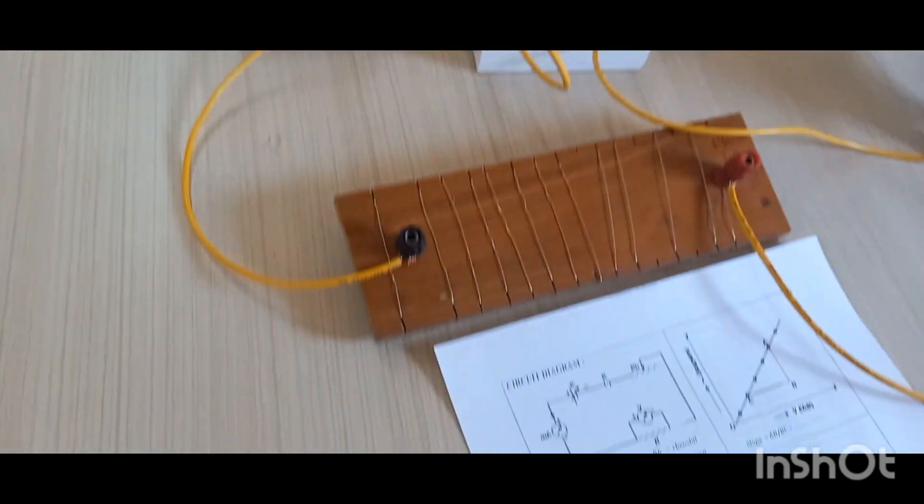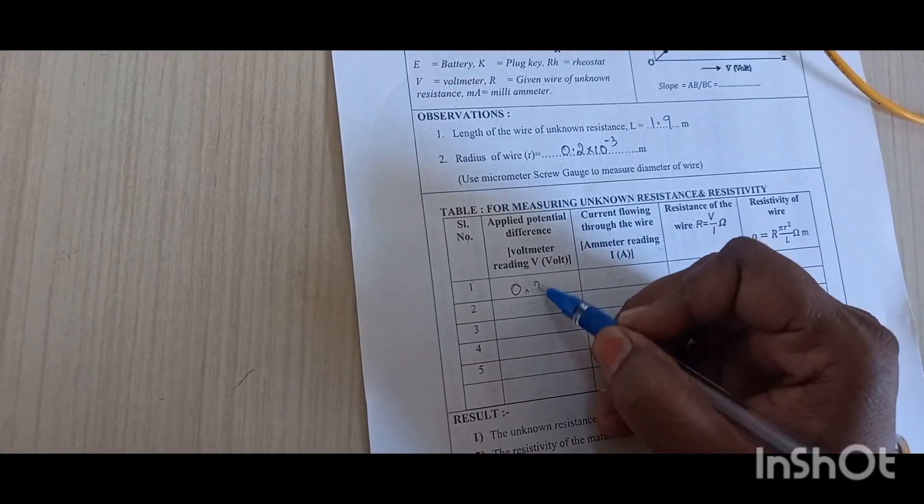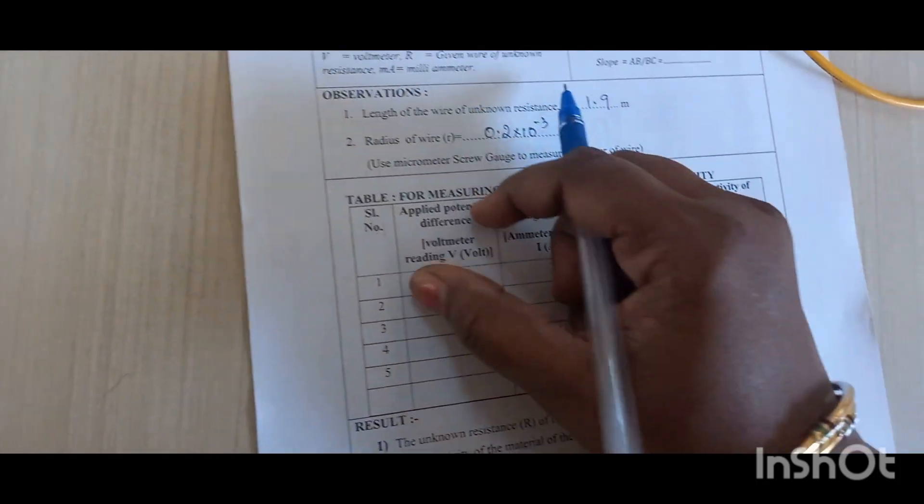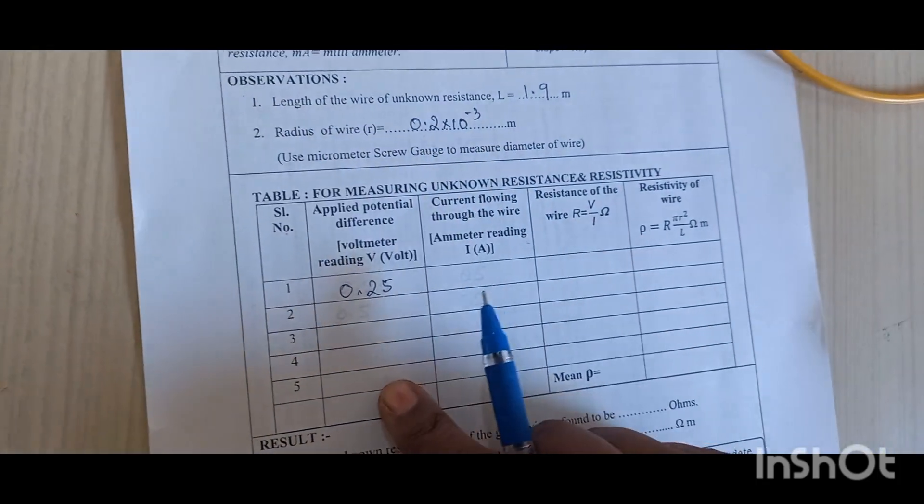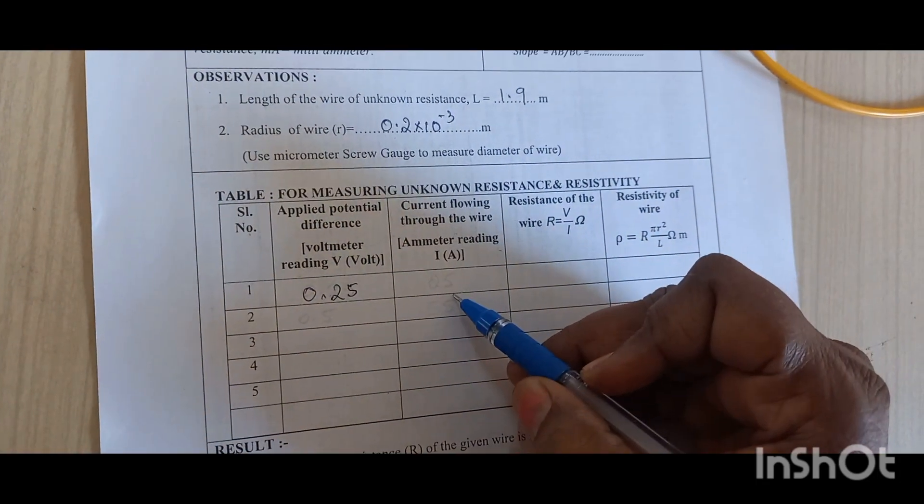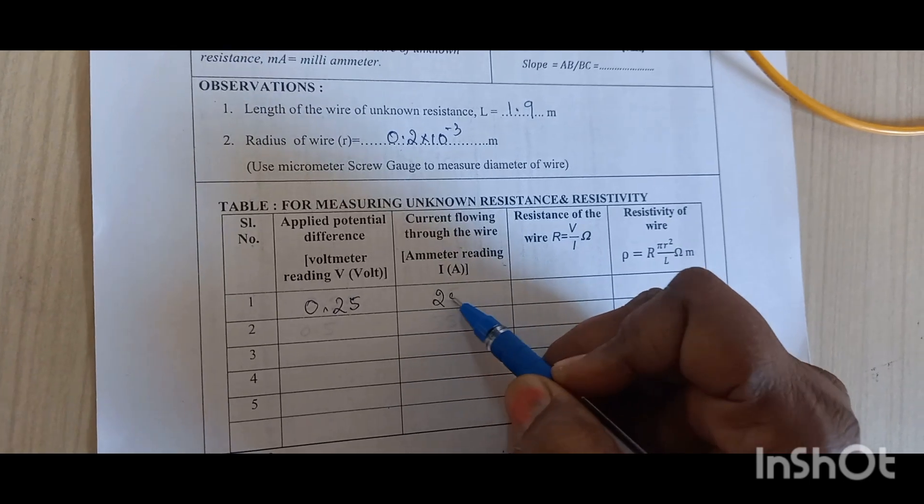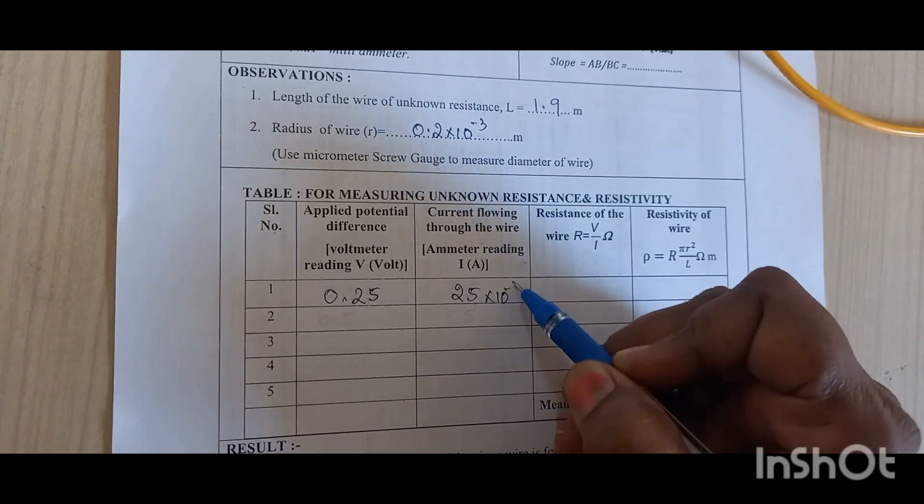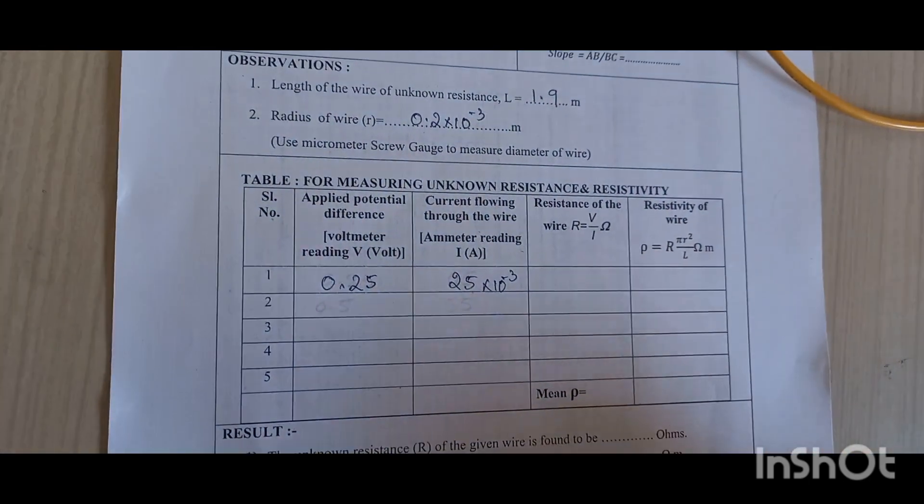So I will write here in the tabular column, note it down 0.25 volt. This is the applied voltage potential difference column. Here we have to write the current reading, that is 25 milliampere. Okay, so next reading.